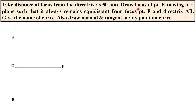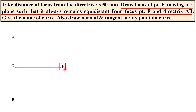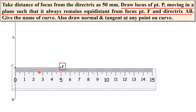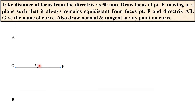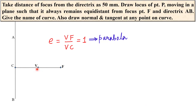Now, the point P must always remain equidistant from focus point F and directrix AB. So here I can locate the vertex point V, which is equidistant from F as well as the directrix — it is the midpoint. Give the name as vertex point V. Here, eccentricity equals VF divided by VC, which is exactly equal to 1 in this case, and that is why you will get a parabola.